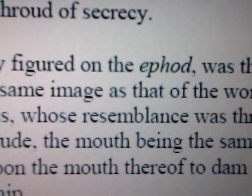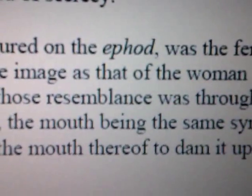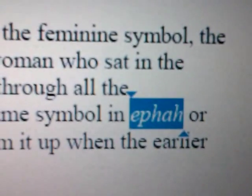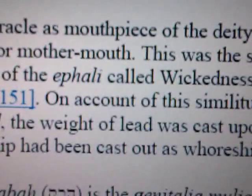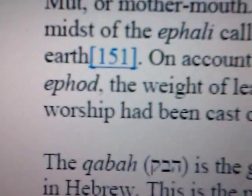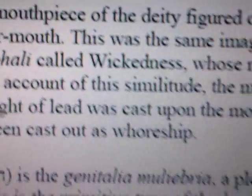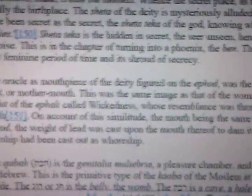Gerald Massey says on this particular point that the oracle as mouthpiece of the deity figured on the ephah was the feminine symbol — I want you to bear that in mind, the feminine symbol — the mouth or mother mouth. This was the same image as that of the woman who sat in the midst of the ephah called wickedness, whose resemblance was through all the earth. On account of this similitude, Massey goes on to write, the mouth being the same symbol in ephah or ephod, the weight of lead was cast upon the mouth thereof to dam it up, when the earlier worship had been cast out as whoreship.